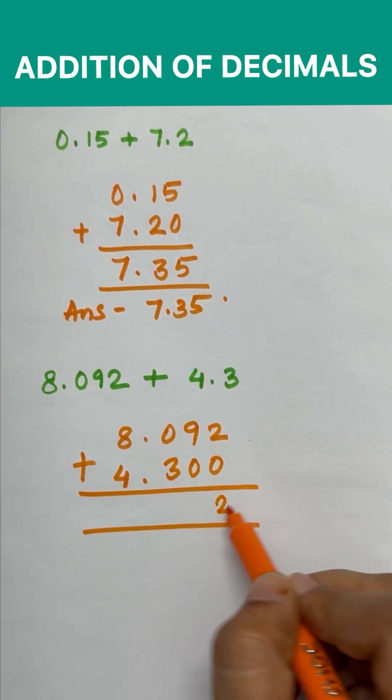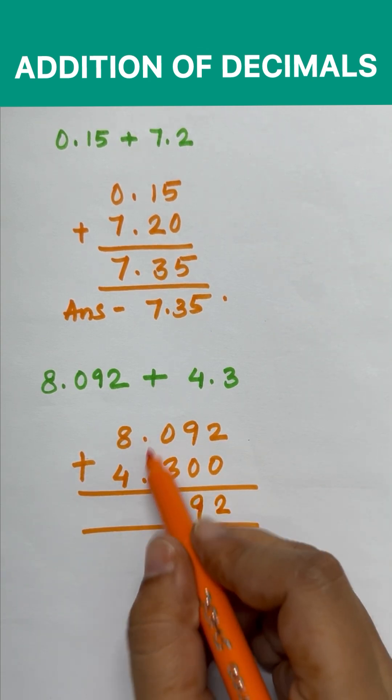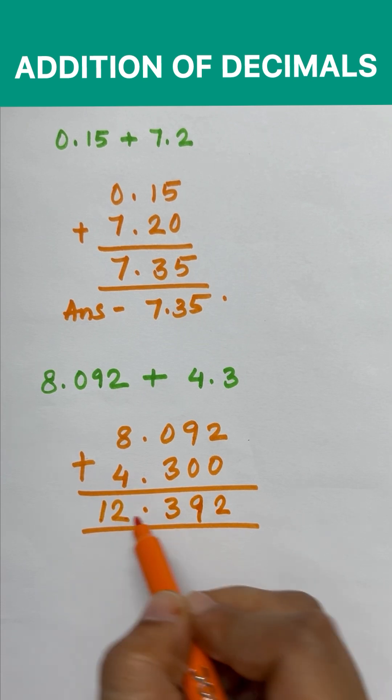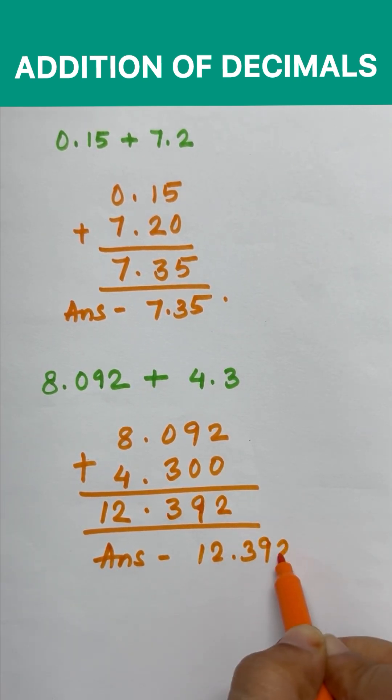2 plus 0 is 2. 9 plus 0 is 9. 0 plus 3 is 3. 8 plus 4 is 12. So answer is 12.392. Thank you.